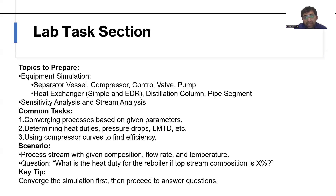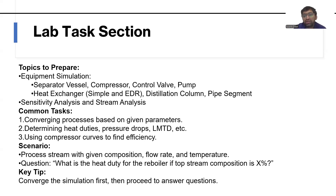Key tips for the lab task: you will be asked to simulate a process operation using equipment like separator vessel, compressor, control valve, pump, heat exchanger in both simple design and EDR, distillation column, and pipe segment. You will be given all process conditions such as composition, flow rate, and temperature. You should know how to input parameters like pressure drop across control valves, tube side and shell side delta P in heat exchangers, and constraints like minimum approach temperature, LMTD, etc.